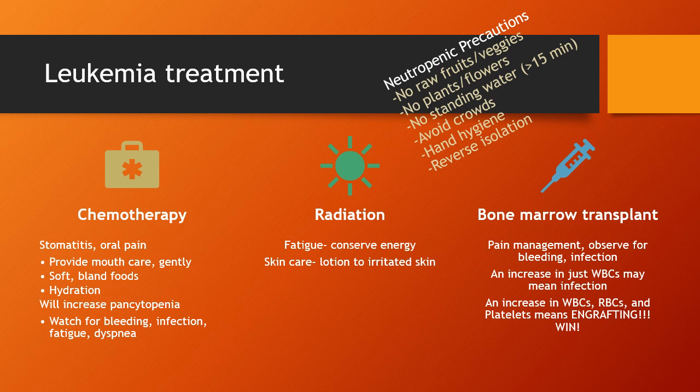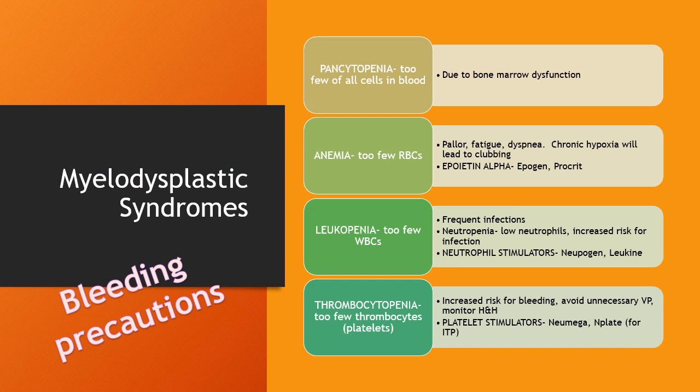You should see an increase in white blood cells, red blood cells, and platelets in about three weeks, indicating the bone marrow transplant has engrafted successfully. However, if you see just an increase in white blood cells, that may indicate an infection. The person who has an absolute neutrophil count of 1,000 or less should be placed on neutropenic precautions: no raw fruits or vegetables, no plants or flowers, no standing water, avoid crowds, good hand hygiene, good respiratory hygiene, and reverse isolation.